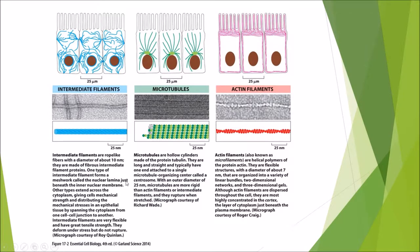Intermediate filaments are mainly anchored from desmosomes. They are rope-like fibres with a diameter of about 10 nanometres, made of fibrous intermediate filament proteins. One type forms a meshwork called the nuclear lamina just beneath the inner nuclear membrane. Other types extend across the cytoplasm, giving cells mechanical strength and distributing mechanical stresses in epithelial tissue by spanning from one cell junction to another. They are very flexible, have great tensile strength, form under stress, but do not rupture.